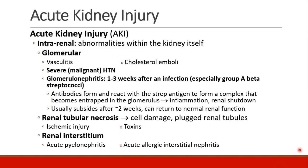Damage to the vessels that feed the renal arteries, like renal artery stenosis or embolism or thrombosis. Then we have intrarenal etiologies — abnormalities within the kidney itself. You can have glomerular problems like vasculitis or cholesterol emboli. Severe malignant hypertension can damage the glomerulus. Patients can develop glomerulonephritis, which occurs one to three weeks after an infection, usually some sort of group A beta strep infection. Antibodies react with the strep antigen and form an immune complex that gets stuck in the glomerulus, leading to inflammation and renal shutdown.